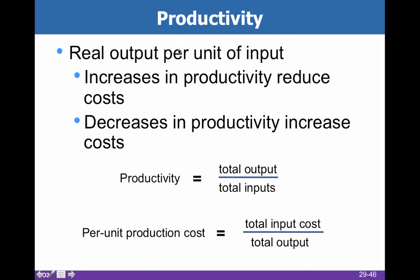Not only input prices affect supply, but also our level of productivity. Increases in productivity reduce costs. For example, if I can teach four, five, or six sections instead of three, my productivity rises from three to five sections per teacher. St. Louis U High then has a more productive economics department. The per unit cost of production is simply your total input over your total output.